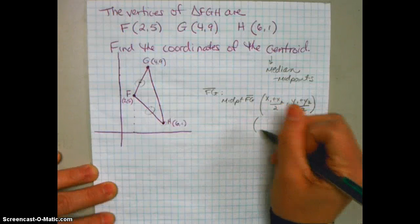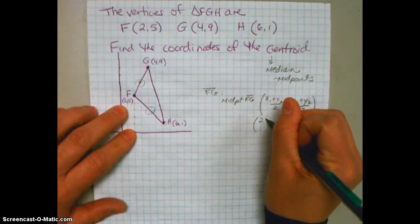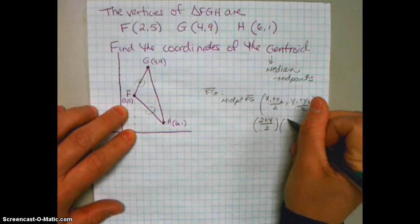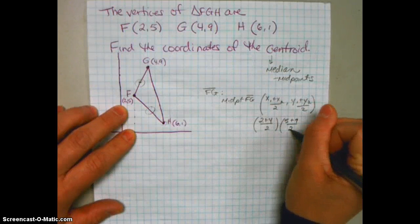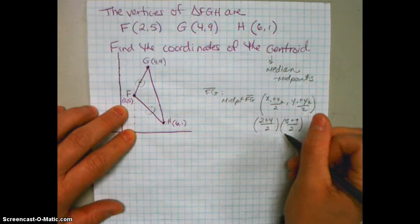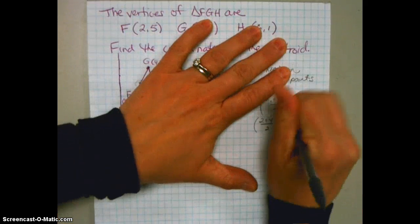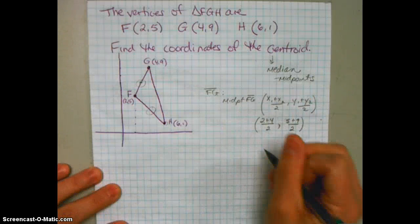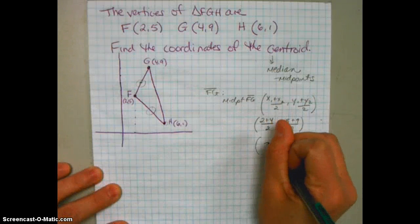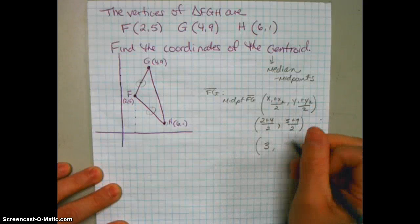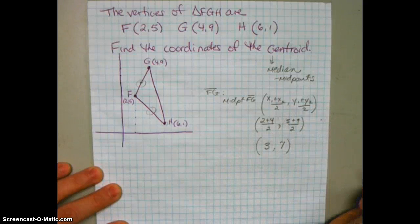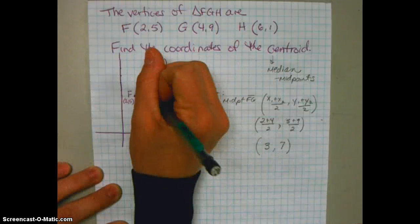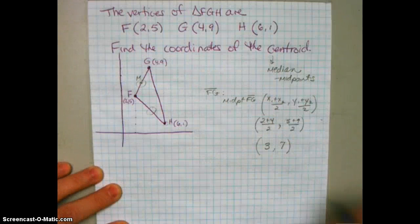So for FG, the ordered pairs give us (2 + 4)/2 and (5 + 9)/2. That's 6/2 which is 3, and 14/2 which is 7. So the midpoint of FG is at (3, 7). That point is right here on the graph — let's call that M.